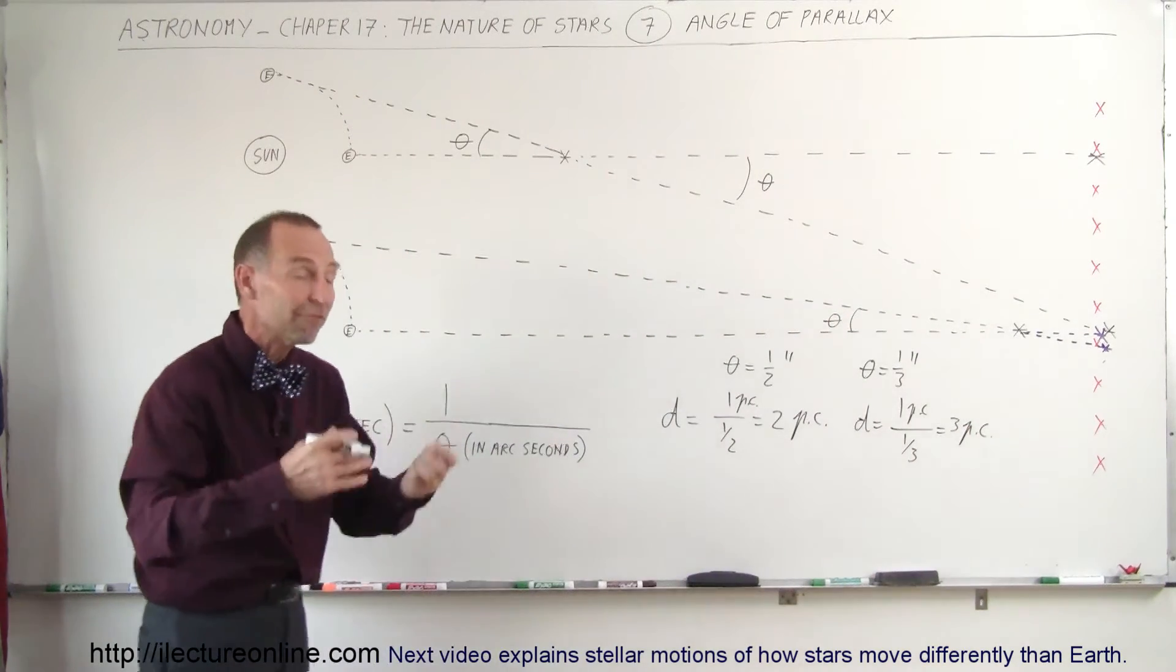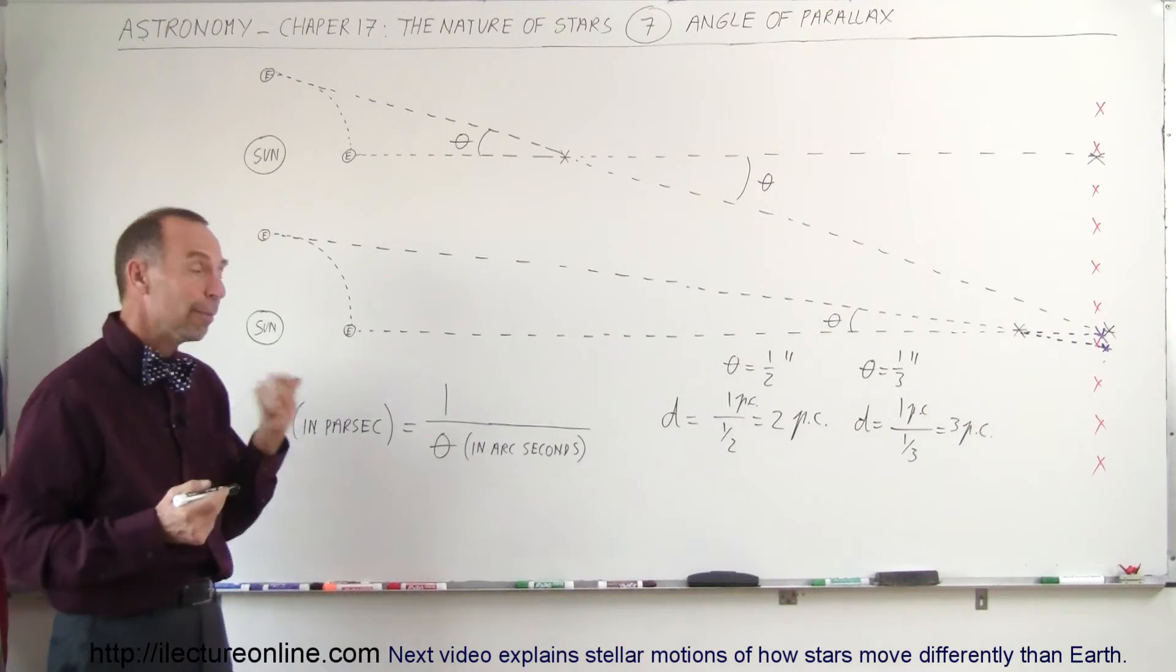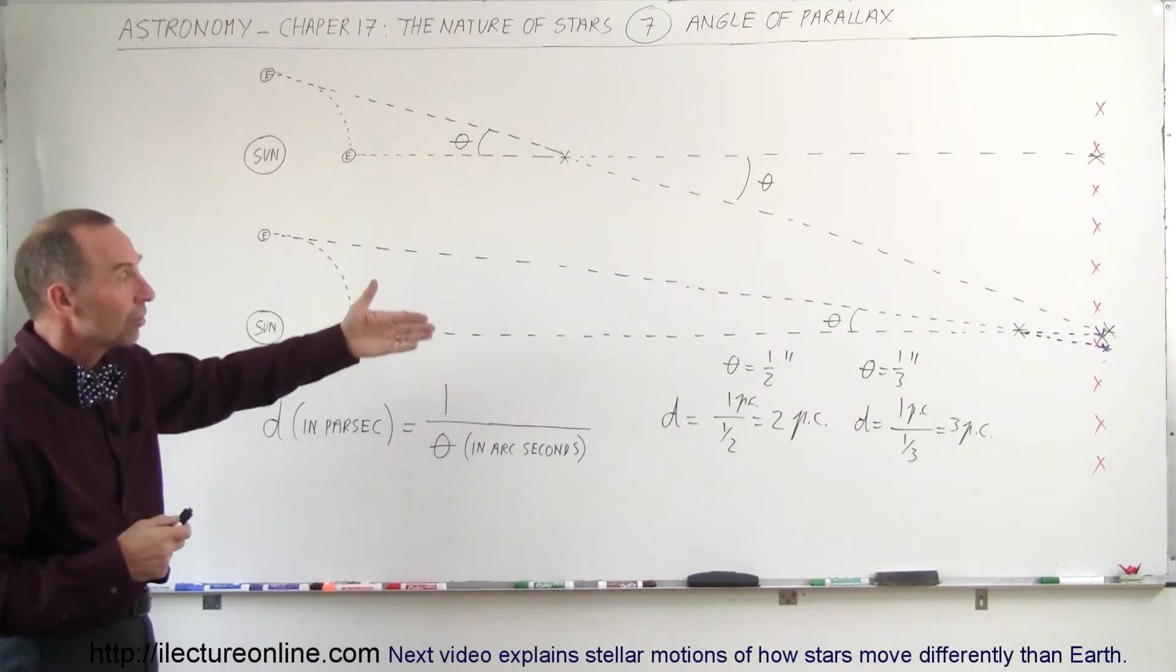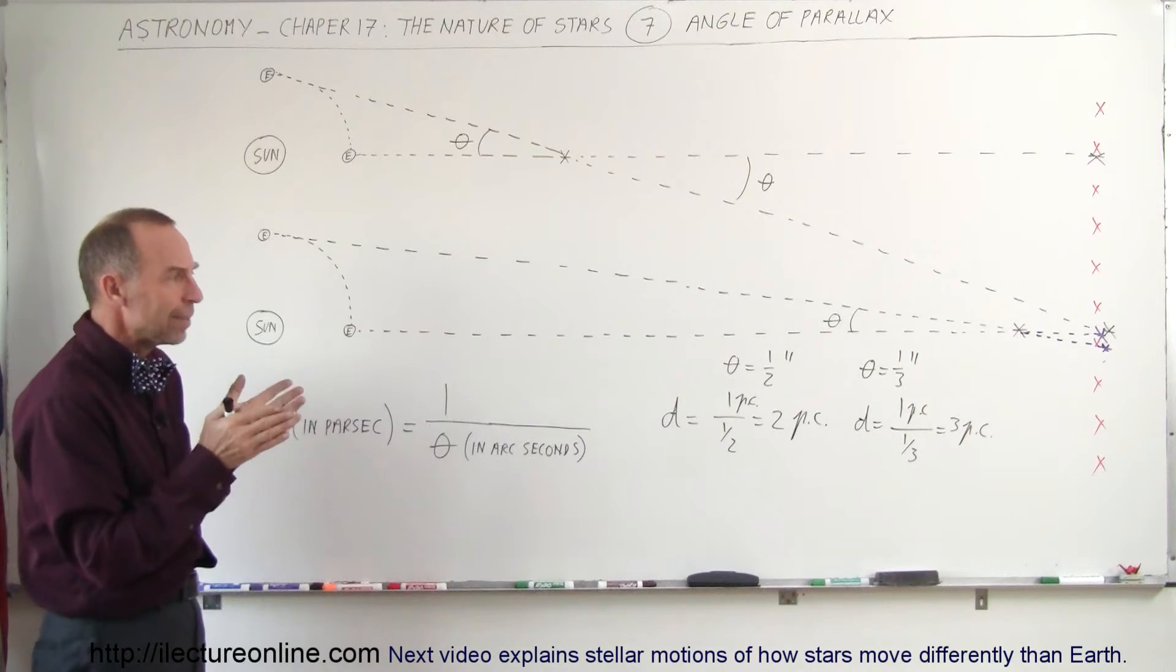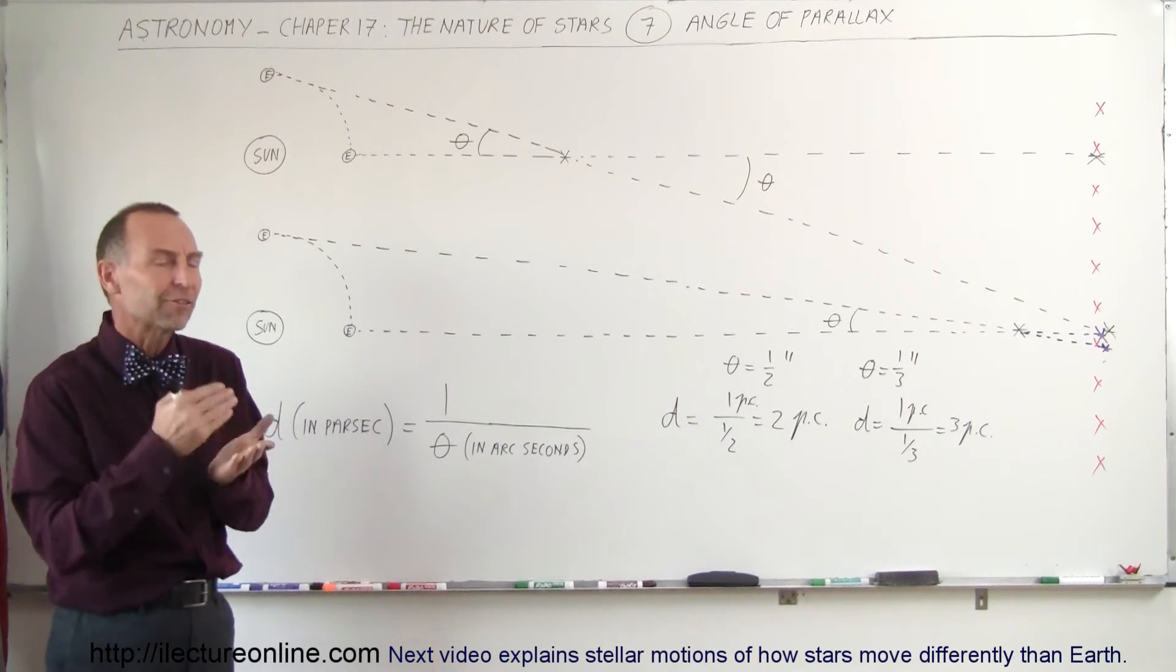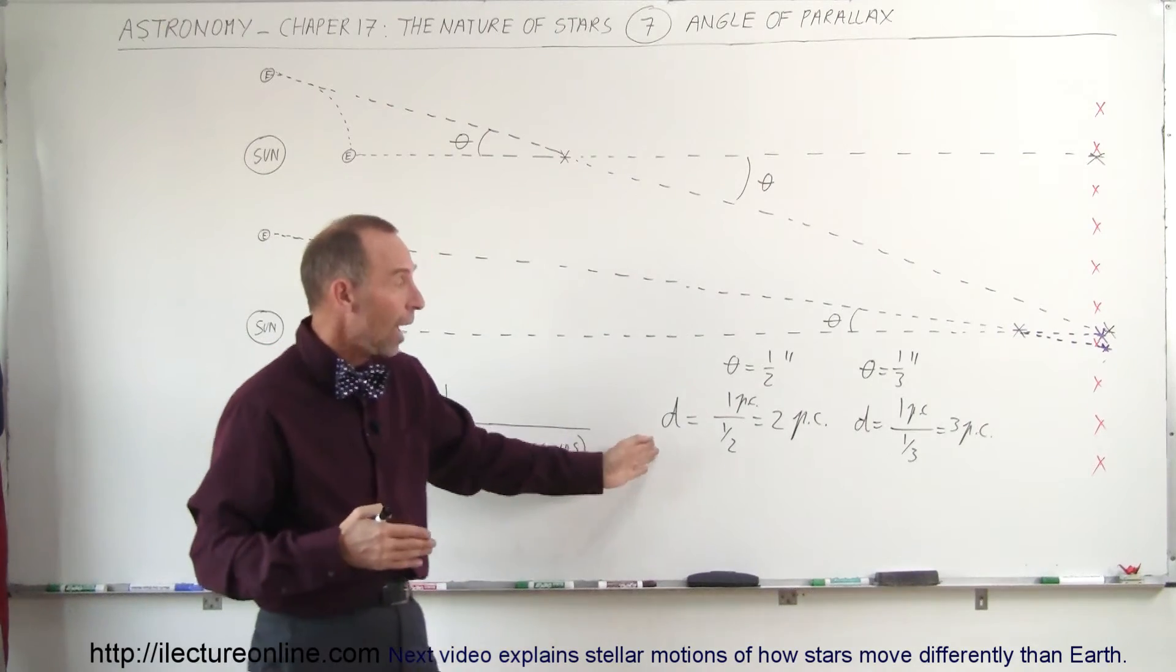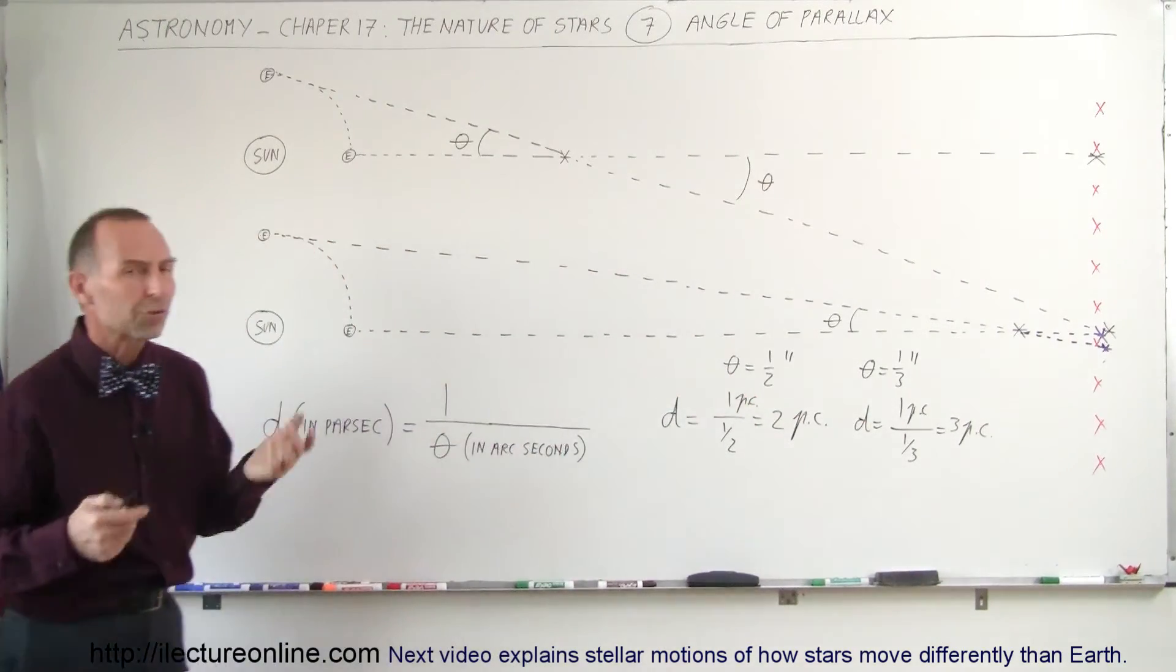So whatever the fraction is, we take the inverse of that and that would be the distance in parsecs. Now, back in the old days, the ability to read the angle of parallax, the best we could do would be about a fifth of an arc second, which means that we were able to find the distance of stars out to about five parsecs, which is about 15, 16 light years, and that was the best we could do.